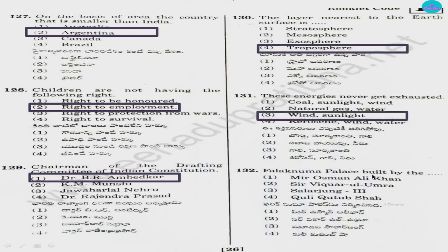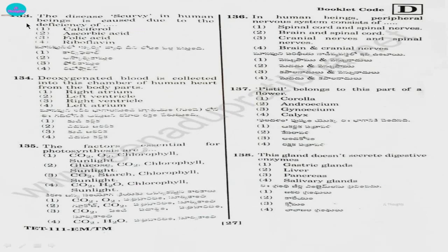Question number 132. Falaknuma Palace built by: 1) Mir Usman Ali Khan, 2) Sir Vikar Ul Umra, 3) Salarjung 3, 4) Kuli Kutub Shah. The answer is option 2, Sir Vikar Ul Umra. Question 133. The disease scurvy in human beings is caused by deficiency of: 1) calciferol, 2) ascorbic acid, 3) folic acid, 4) riboflavin. Answer is option 2, ascorbic acid — you can also call it vitamin C.